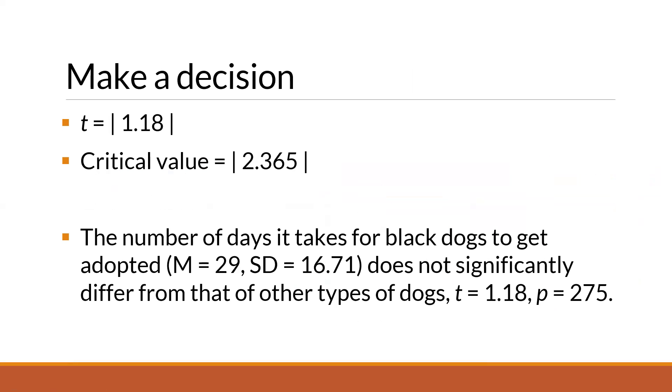Okay, so the value that we obtained using manual computation is 1.18. Using Jamovi, it's 1.19, so it's not that far from one another, just a difference of 0.01. And the critical value that we got earlier is 2.365. And we will compare the t-value from the computation with the critical value. And we can see here, obviously, that the t-statistic is lower compared to the critical value. Therefore, our decision is we fail to reject the null hypothesis.